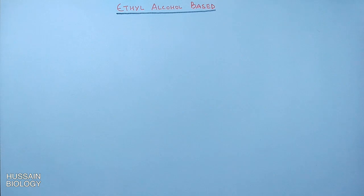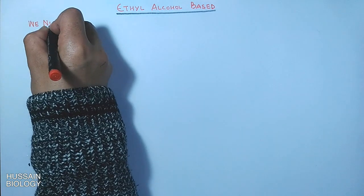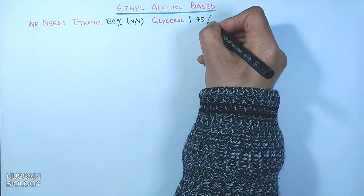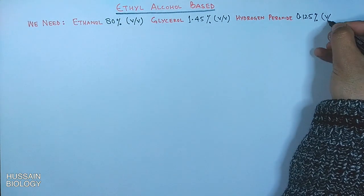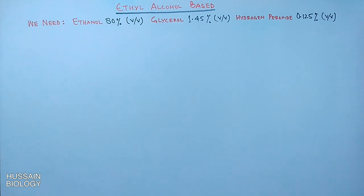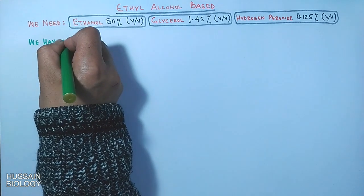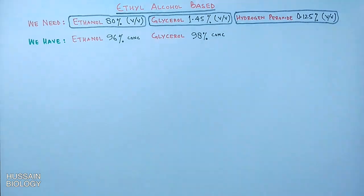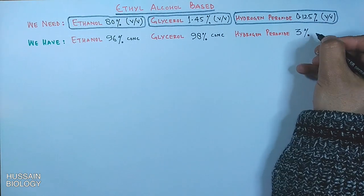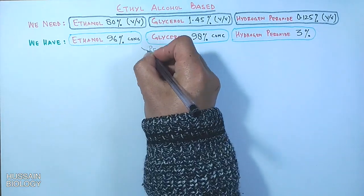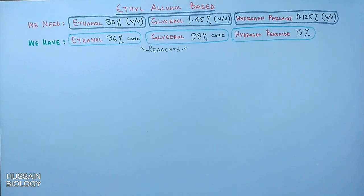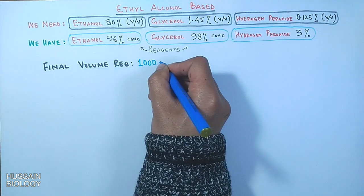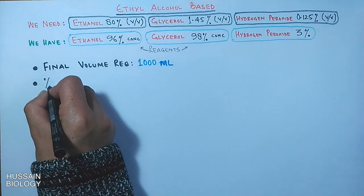Now let's see how to make the ethyl alcohol formulation using available reagents. In the final solution we need ethanol at 80%, glycerol at 1.45%, and hydrogen peroxide at 0.125%. The available reagents are: ethanol at 96%, glycerol at 98%, and hydrogen peroxide at 3% concentrated. These are the reagents from which we make the final hand rub solution. The final volume required is 1000 ml or one liter.